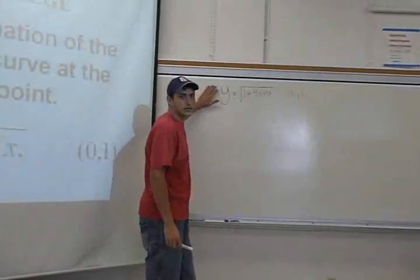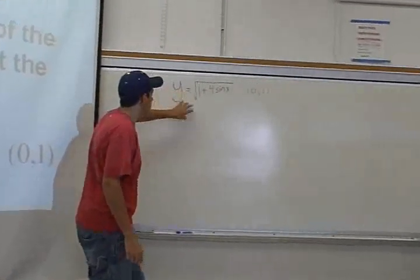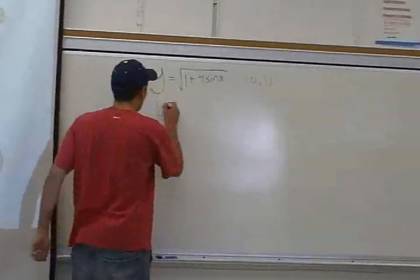So first of all, to find the slope of the tangent line, you need to take the derivative of this function. So here we go.